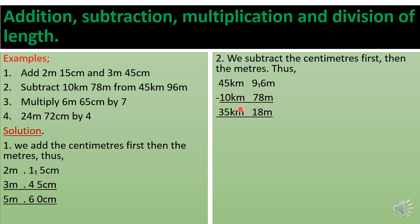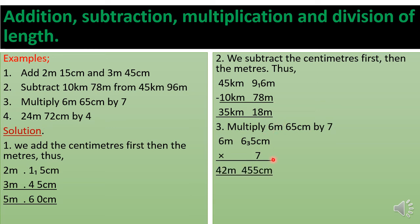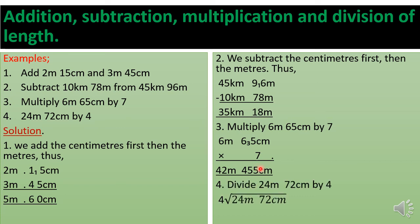For multiplication: seven times five is 35 — write five, carry three. Seven times six is 42, plus three is 45, giving us 455 centimeters. Seven times six meters is 42 meters. That is how we get the answer — very simple.